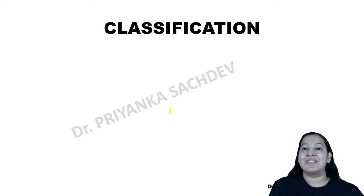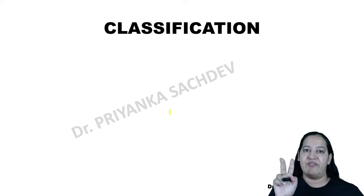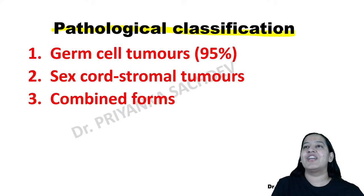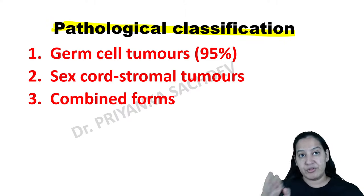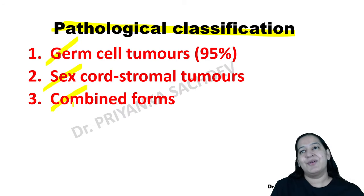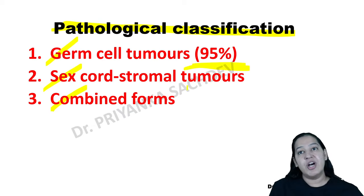The pathological classification of testicular tumors: they are of three types — germ cell tumors (GCT), sex cord stromal tumors, and combined germ cell plus sex cord tumors. Germ cell tumors are the most common, comprising 95% of all testicular tumors. The remaining sex cord and combined types account for only 5%.